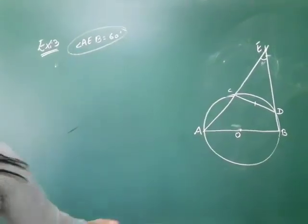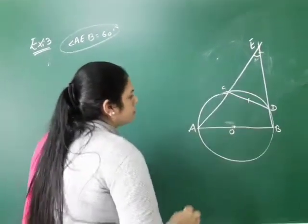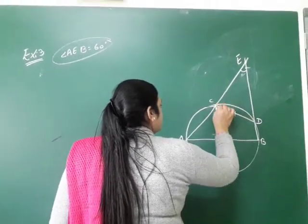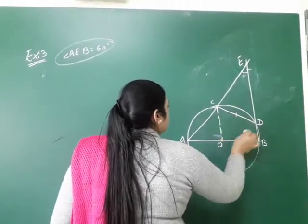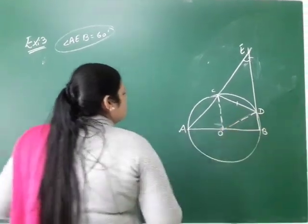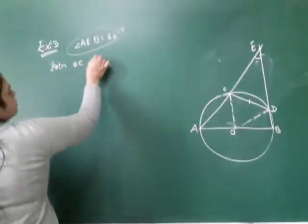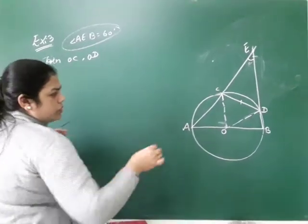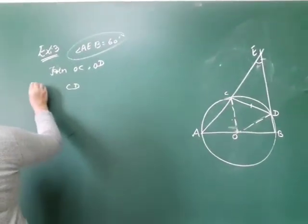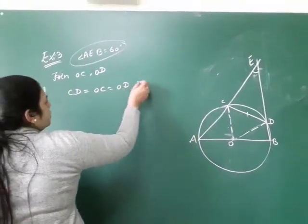First, for the construction, we join OC and OD. So we have joined these two — OC and OD. These are the radii of the circle.